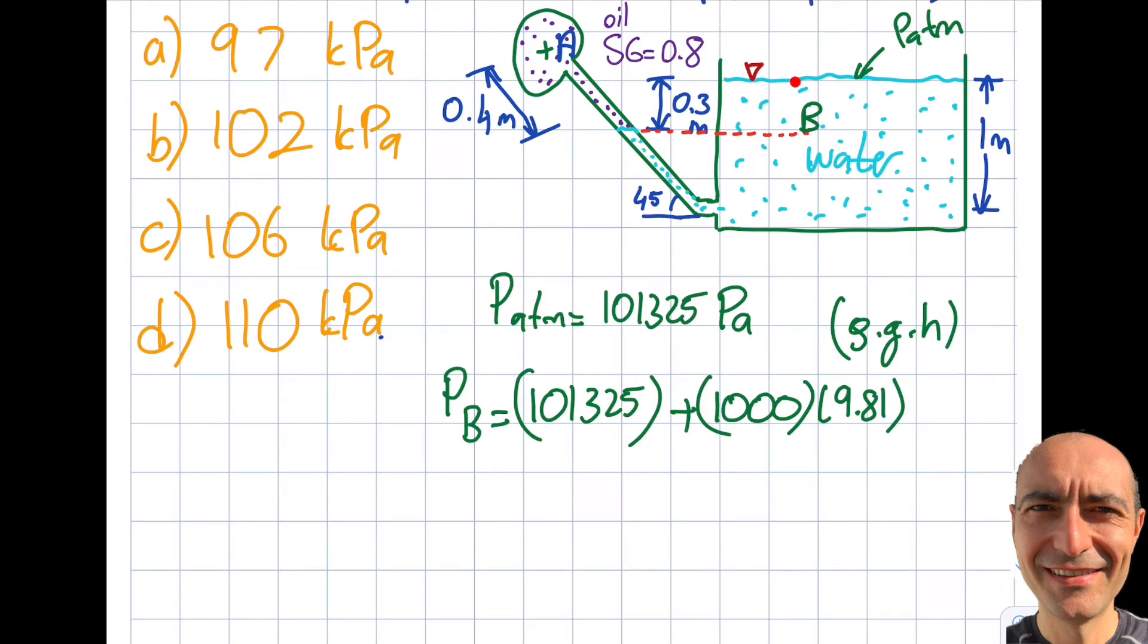Rho is density, g is gravity, h is the height. And what is the height between this point and this point? Well, it's given over here, 0.3. So will this 45 degree come into play? No, not really, so far. That will be 0.3.